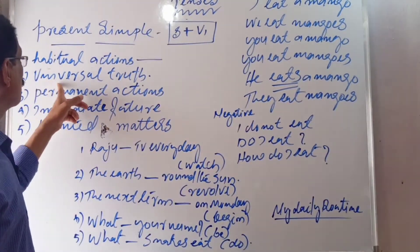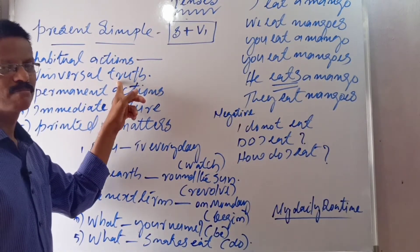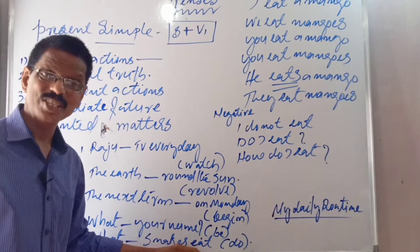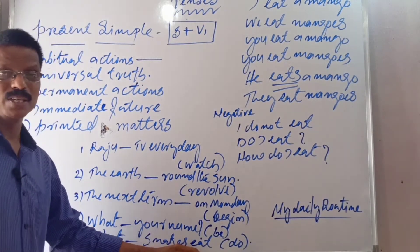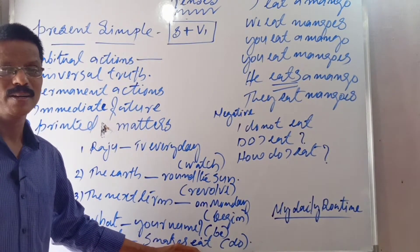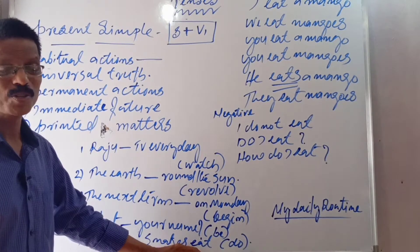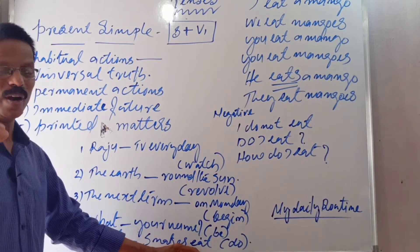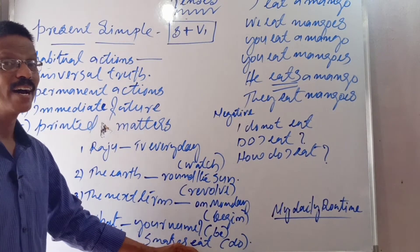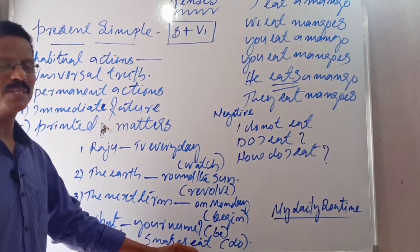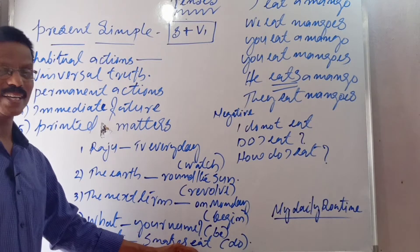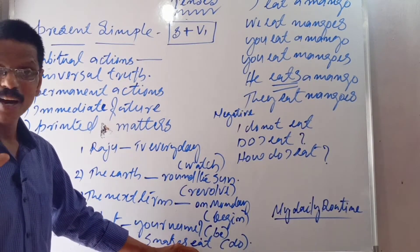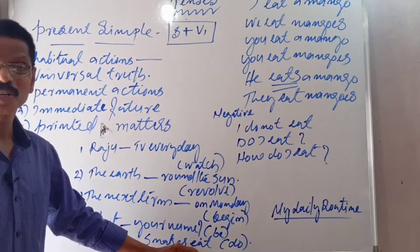Number two: Universal truth — something which will never change. The sun rises in the east. The earth is round. God loves you — God is singular, so 'loves,' not 'love.' Don't make that mistake. Universal truth should be in present simple tense.